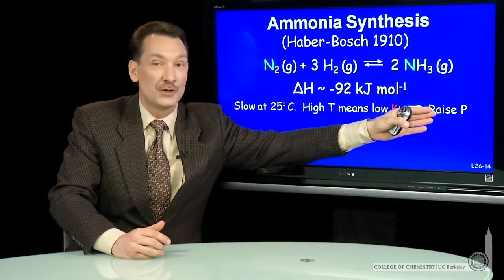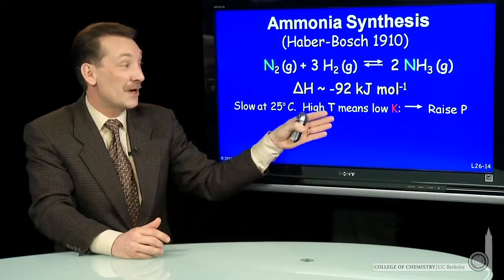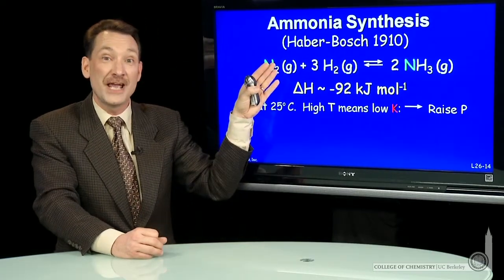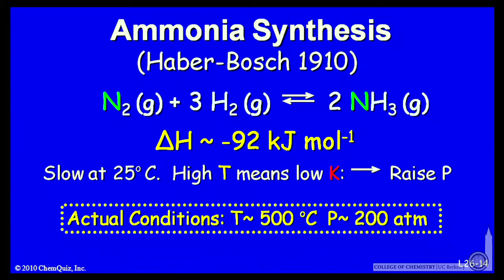So I can get it to shift towards products as I raise the temperature, which tends to favor reactants. The balance is to go to a relatively high temperature—500 degrees C—and an extremely high pressure—200 atmospheres. That will efficiently balance the kinetics,